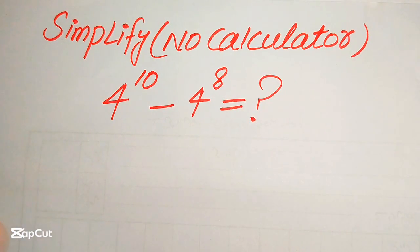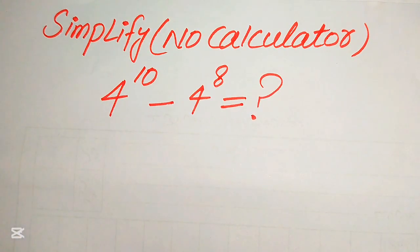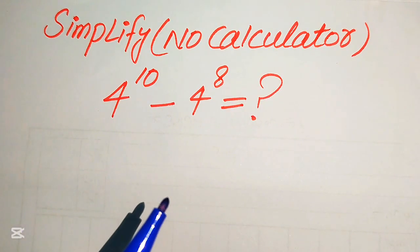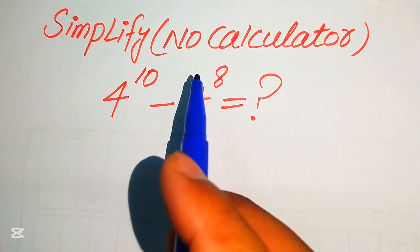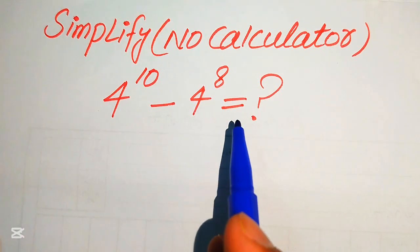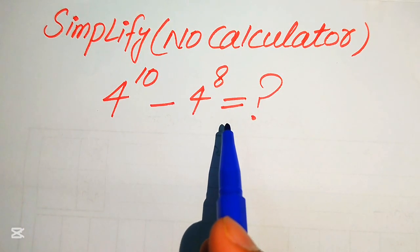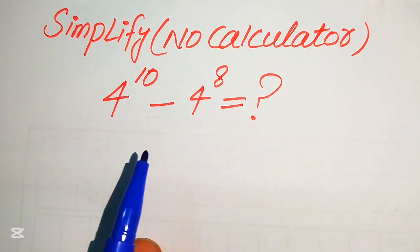Hello everyone, today I want to show you how to simplify this algebraic expression. We have 4 to the power of 10 minus 4 to the power of 8, and we will write this into simplified form. Note that a calculator is not allowed in this problem, meaning we will show all of the working on paper.